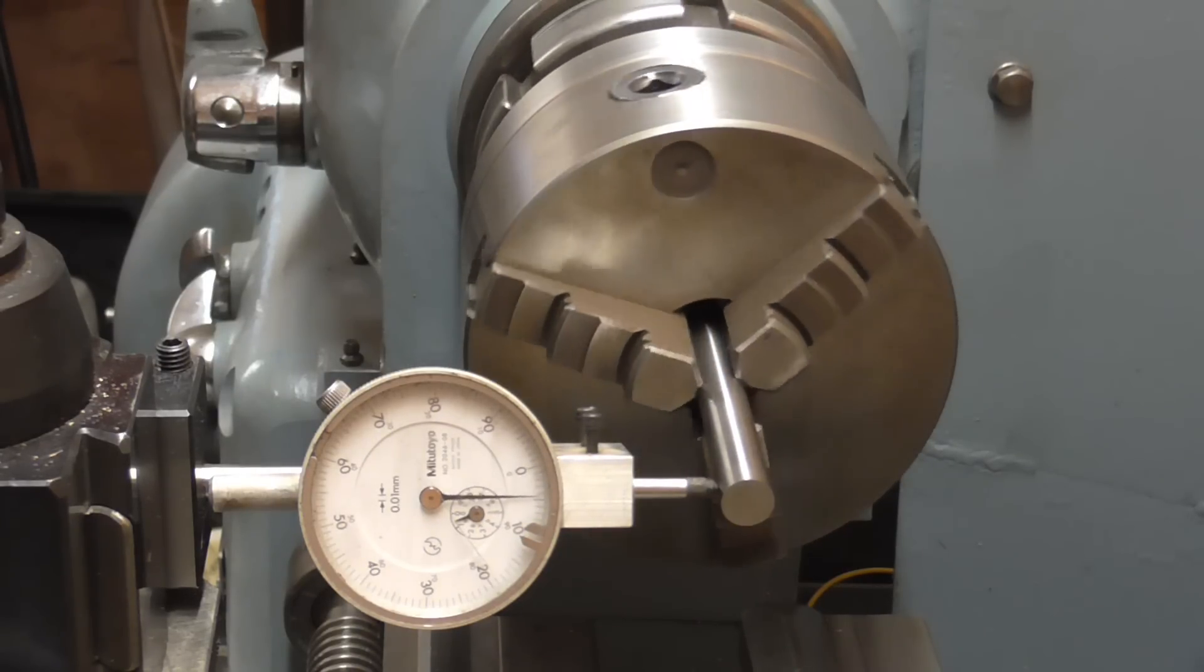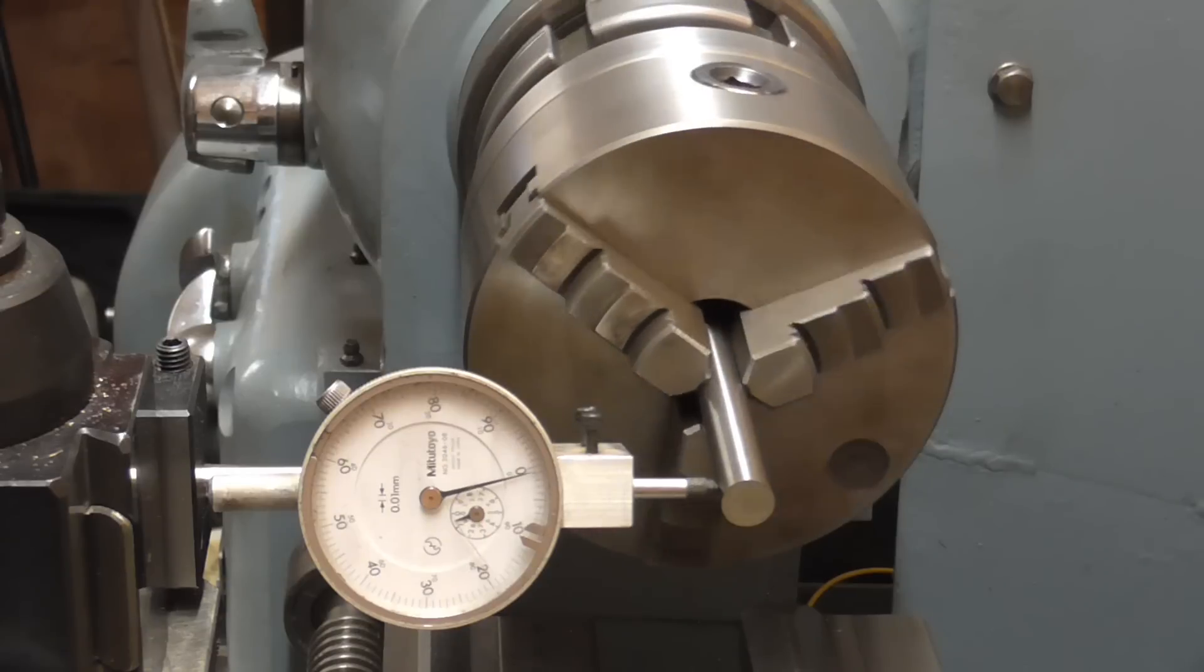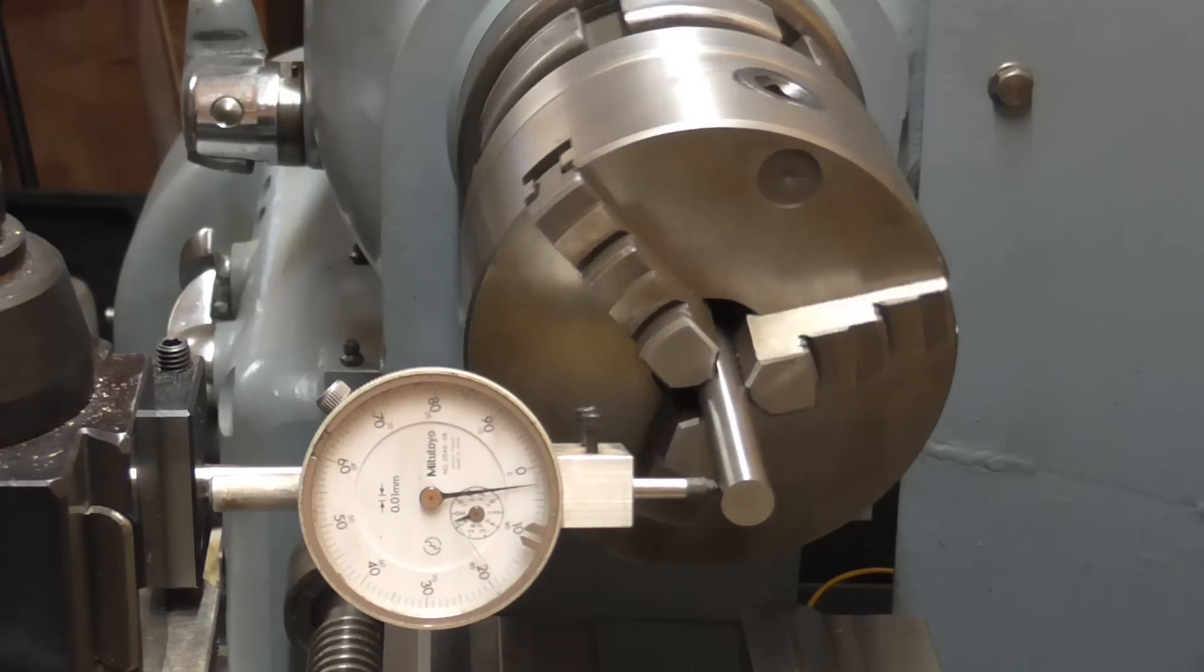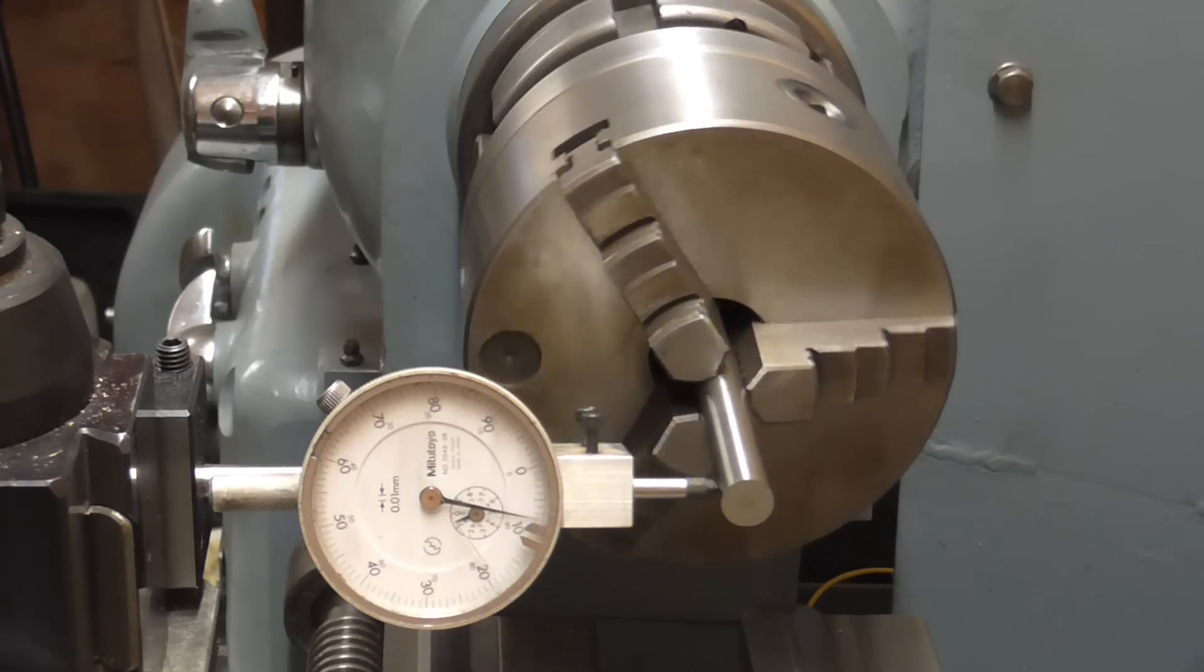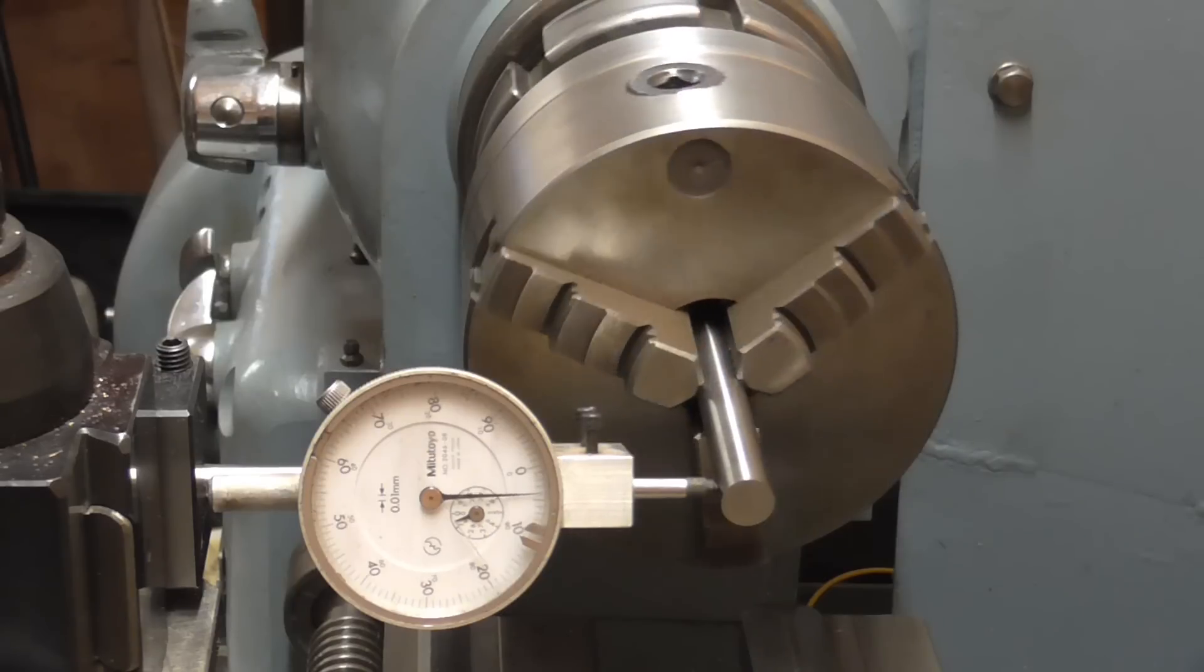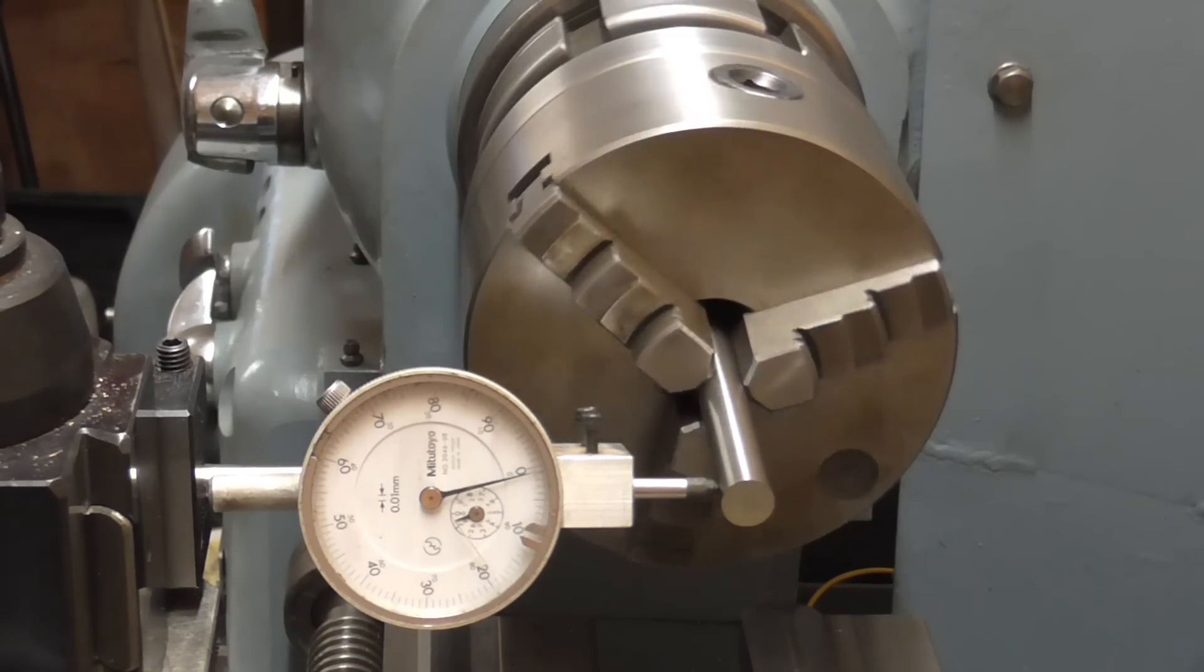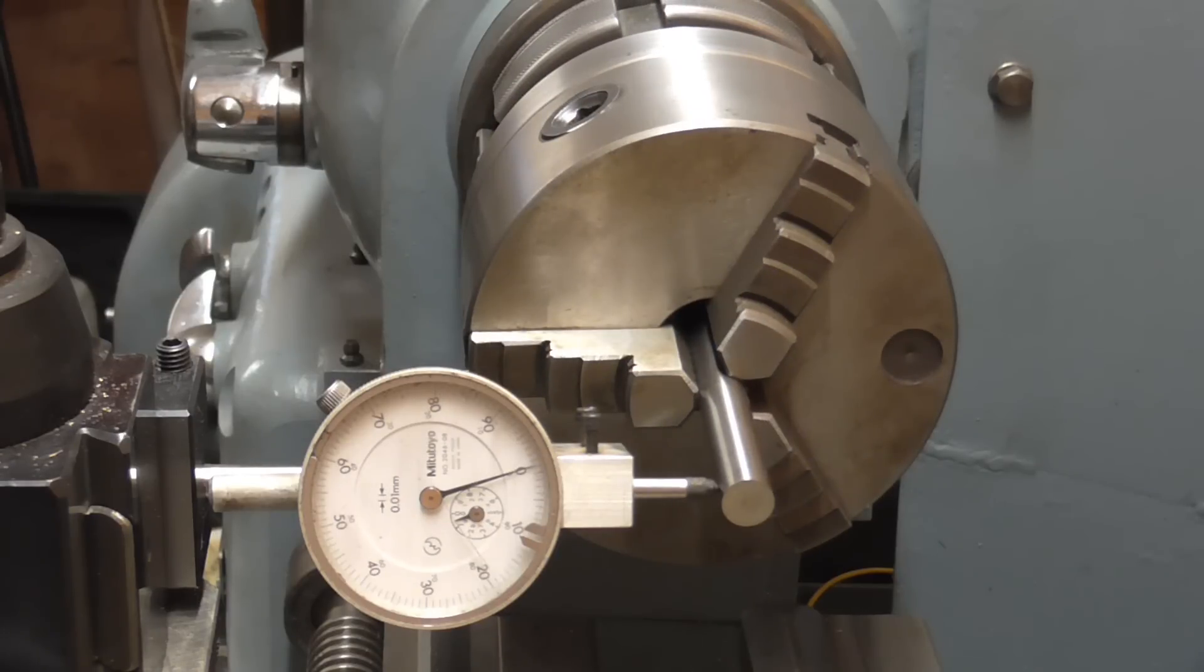Okay, with the jaws in the wrong slots, we're now seeing eight hundredths variation which is about four thousandths of an inch, which isn't particularly good, it's not that bad either.